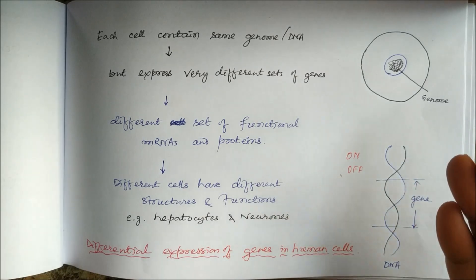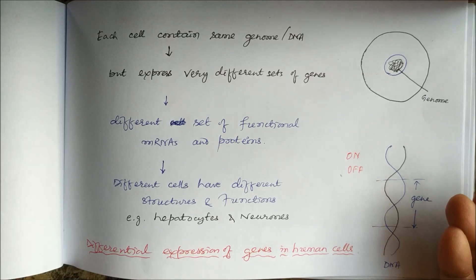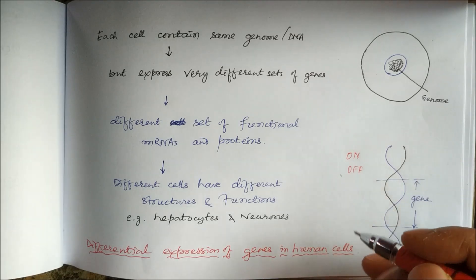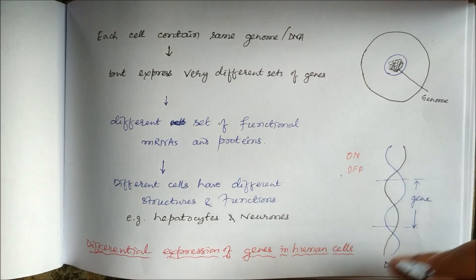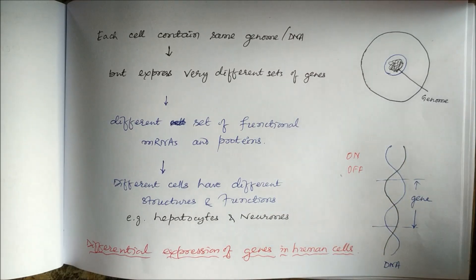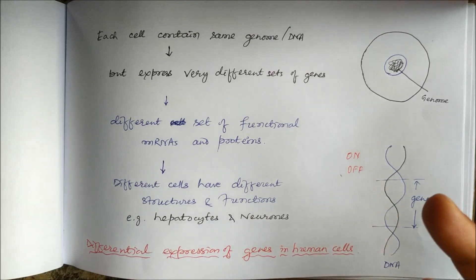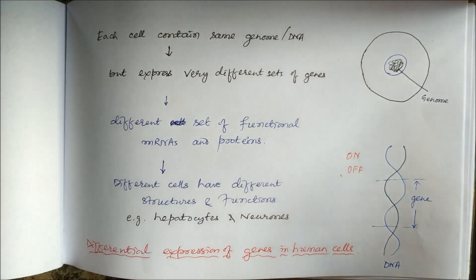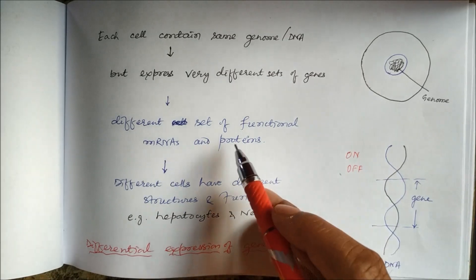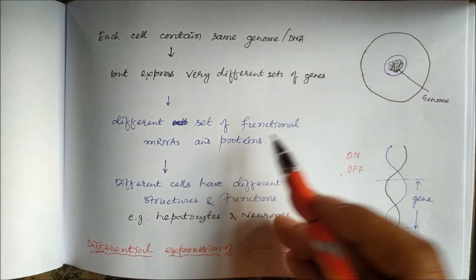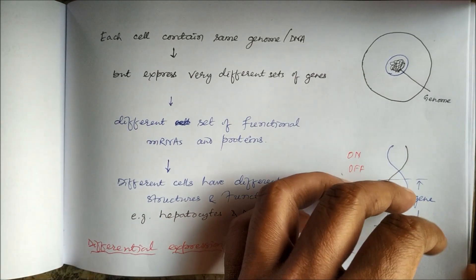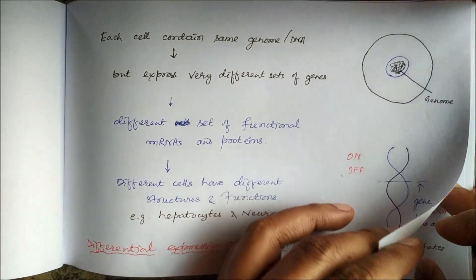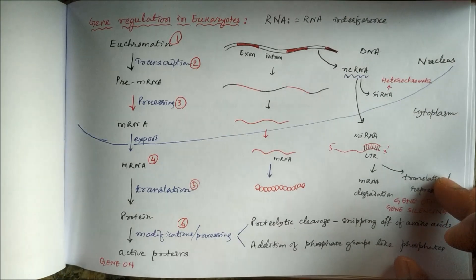We have around 25,000 genes. Out of those, one cell may express only 10 genes, another cell may express 15 or 20 genes, and another cell may express 100 genes. Accordingly, they produce different types of proteins and have different structures and functions. This is the physiological requirement for gene regulation.